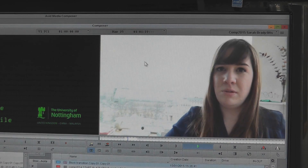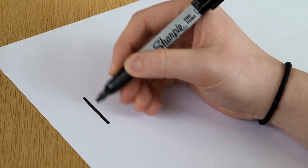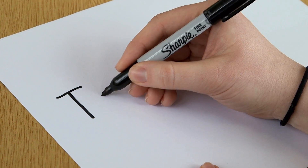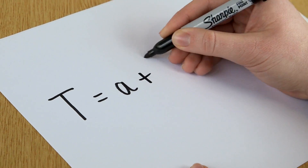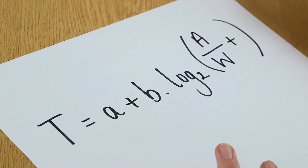A target is anything that you might want to click on on the computer screen — a menu item, closing a window, highlighting some text. Any situation where you're moving your cursor to another location on screen. I'll write down the formula: the time it takes you to move from your location to a target is equal to a plus b times log base 2 of amplitude over width plus 1.